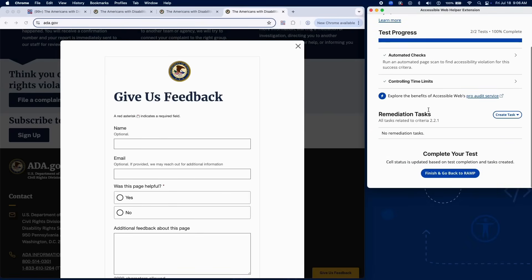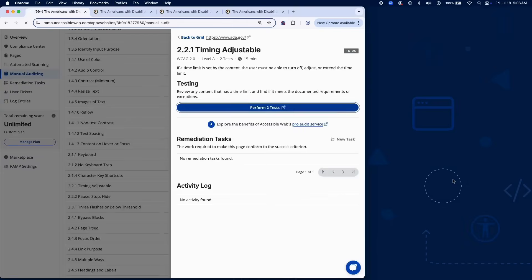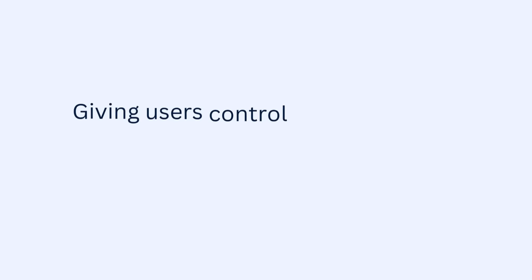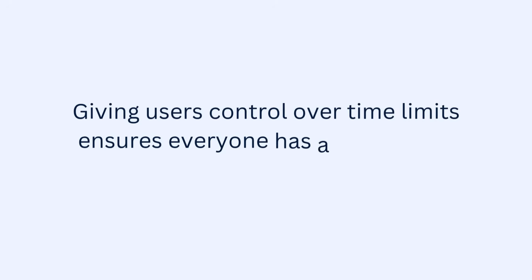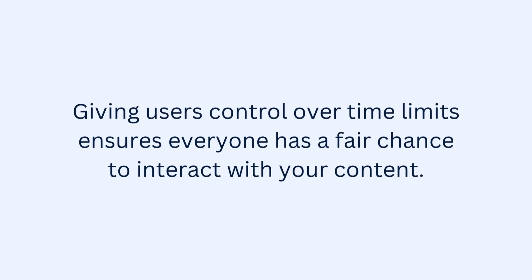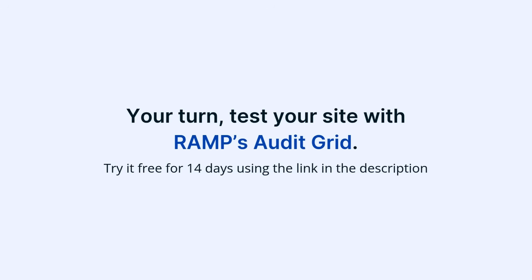That wraps up the audit for Success Criterion 2.2.1 using RAMP's Audit Grid and Chrome extension. Giving users control over time limits ensures that everyone has a fair chance to interact with your content. Now it's your turn — test your site with RAMP's Audit Grid. Try it free for 14 days using the link in the description.